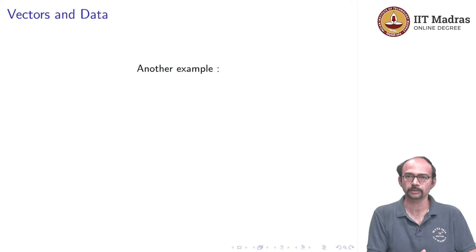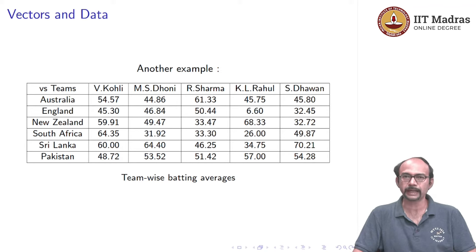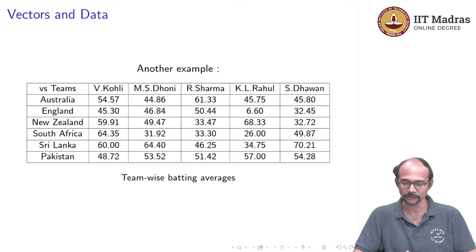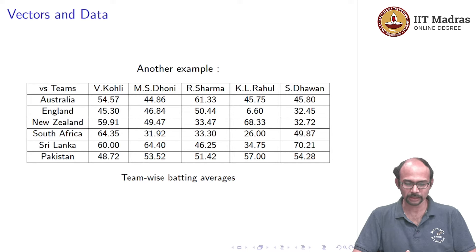Here is another example from our national passion. This is the team-wise batting average for some players — Virat Kohli, Dhoni, Rohit Sharma, KL Rahul and Shikhar Dhawan — against the teams Australia, England, New Zealand, South Africa, Sri Lanka and Pakistan. In the table, we see for each team the batting average for each player.